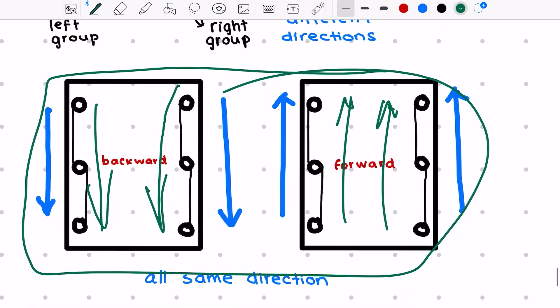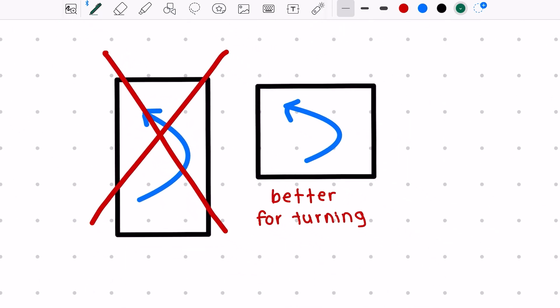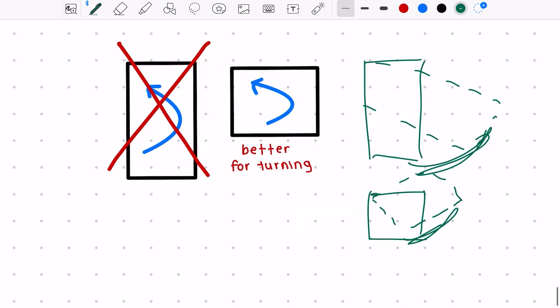One of the drawbacks of a tank drive base is if it gets too long, it can become really difficult to turn because there's more friction between the wheels and the ground. So essentially having a shorter drive base will make it easier to turn.